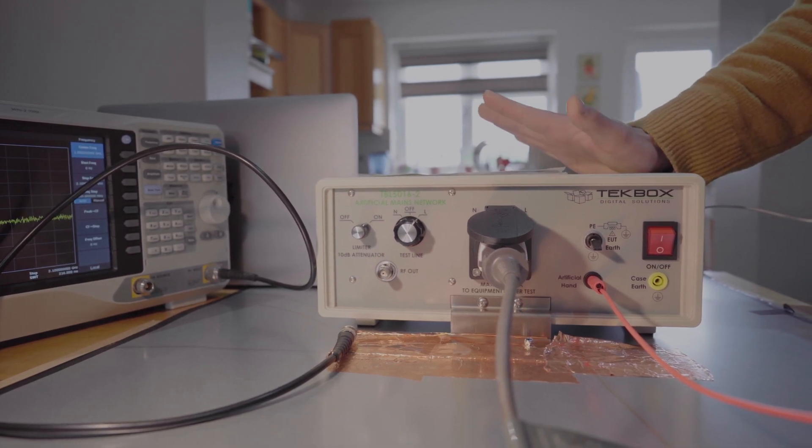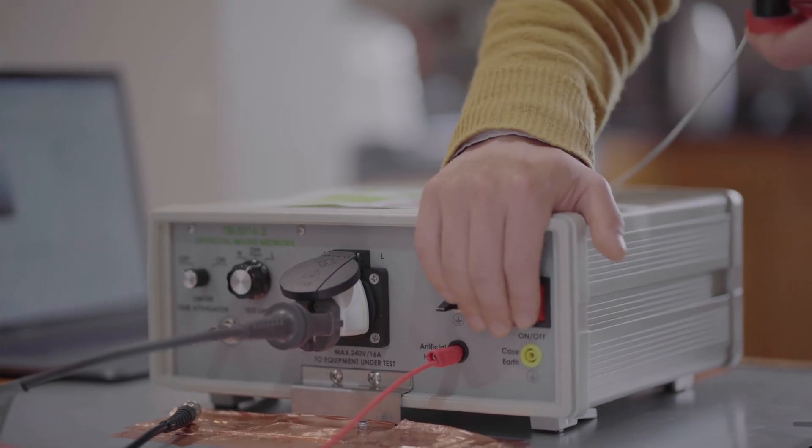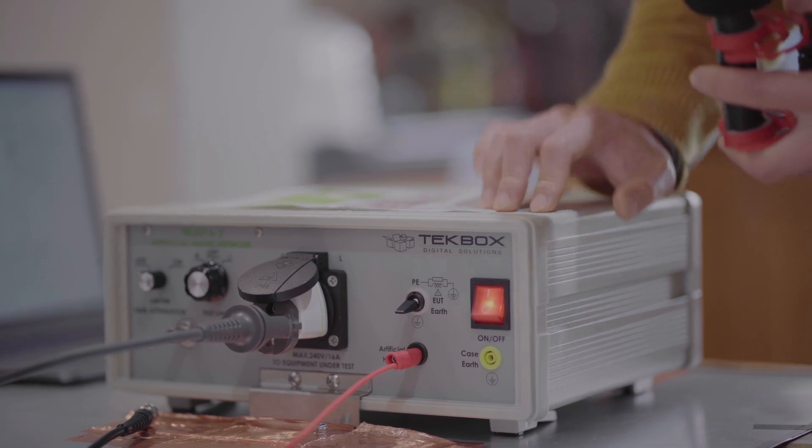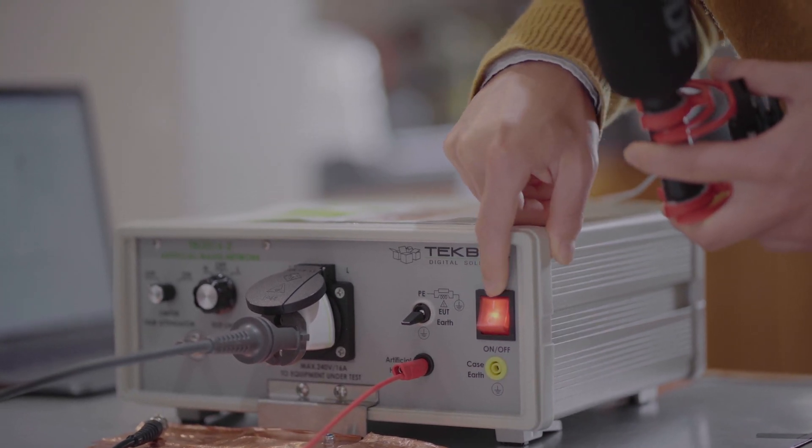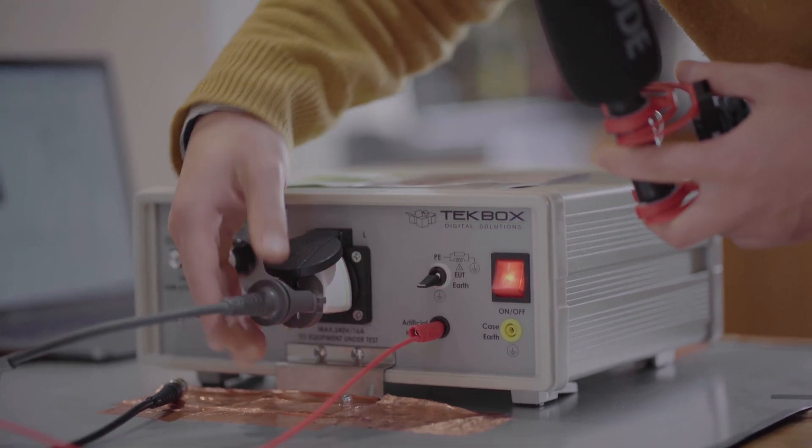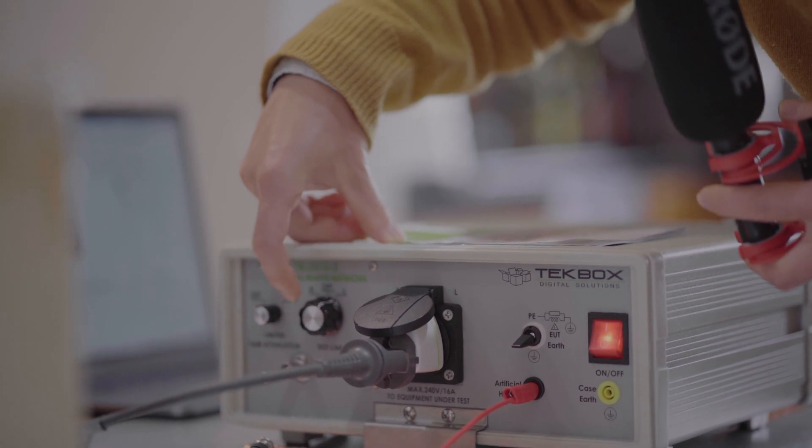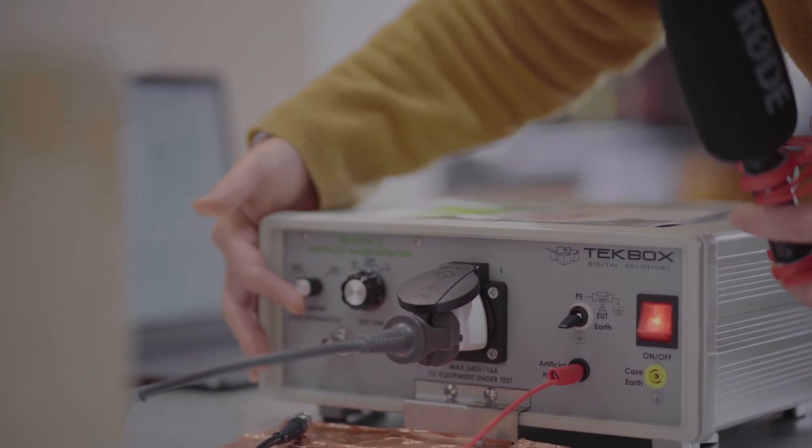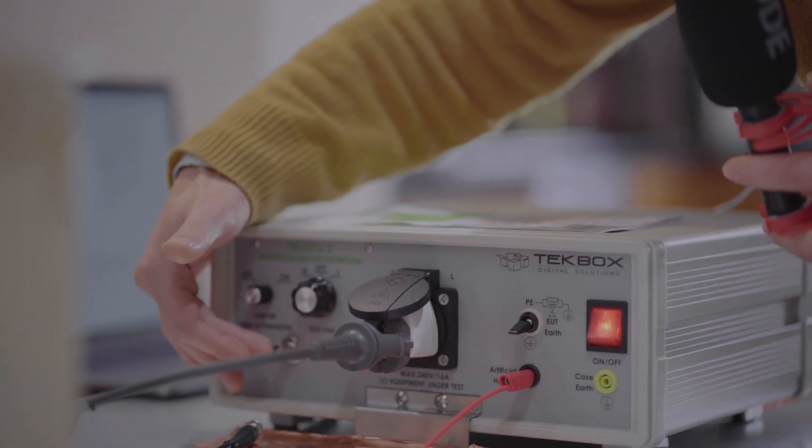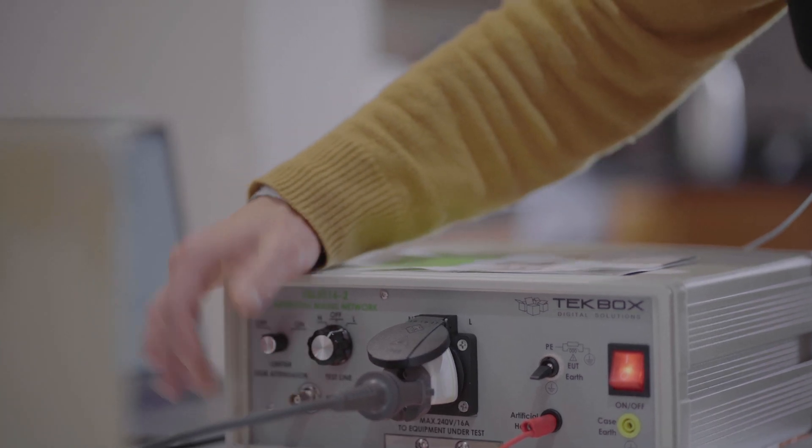Okay, so now we are going to have the product tested. So everything set up. Switch on the LISUN. You can see the light is on. And we make sure artificial hand is connected. Power cable connected. And we're going to measure the conducted emission on the live line. And then I turn the attenuator off because I already checked the RF output before I'm going to connect the spectrum analyzer.